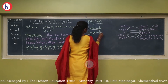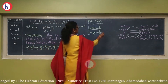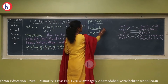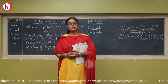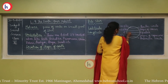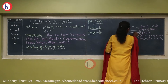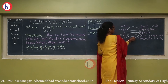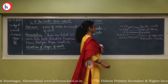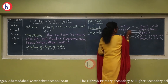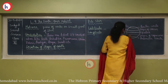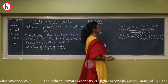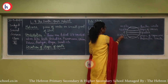Latitude and longitude are imaginary lines. Imaginary horizontal lines are called latitudes, and vertical lines are called longitudes. These lines are seen on the map of the Earth, not on Earth's surface. The 0 degree imaginary line is called the equator. The part above the equator is called the Northern Hemisphere, and the part below is called the Southern Hemisphere. The lines parallel to the equator are called latitudes. 23.5 degrees north latitude is called the Tropic of Cancer.